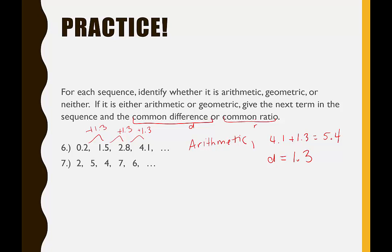Okay, in example seven we have 2, 5, 4, 7, 6, dot dot dot. To get from two to five, I would have to add three. To get from five to four, I would have to add negative one. Four to seven, add three. Seven to six, add negative one.